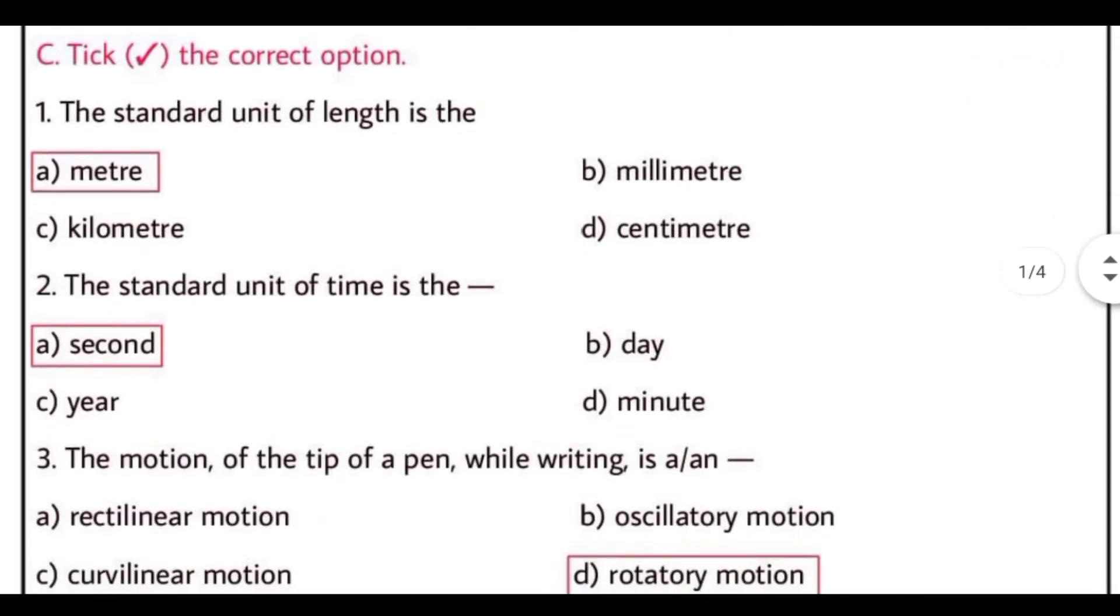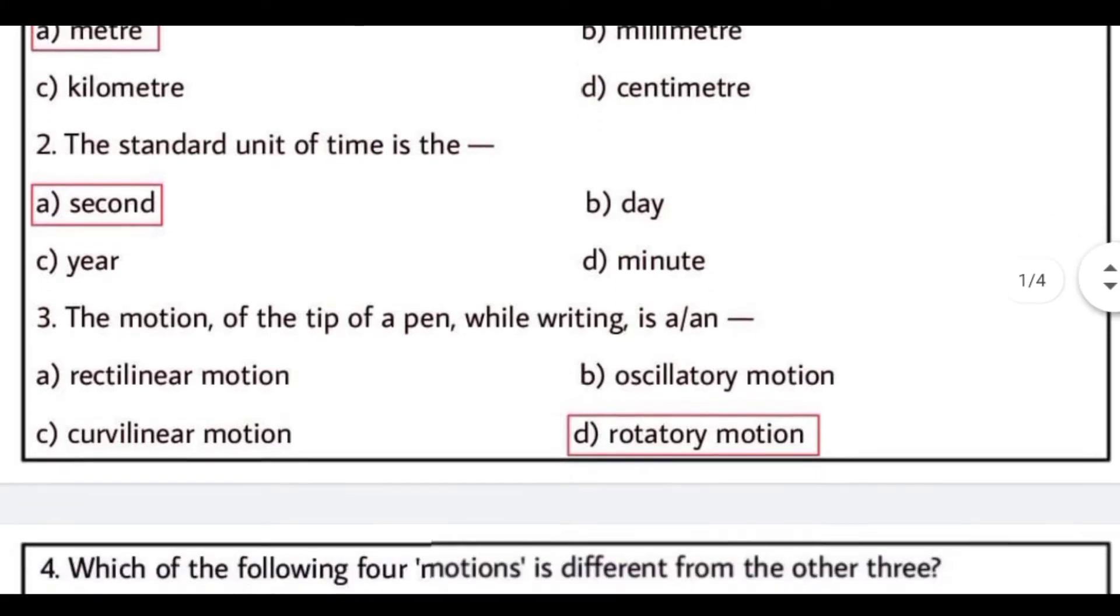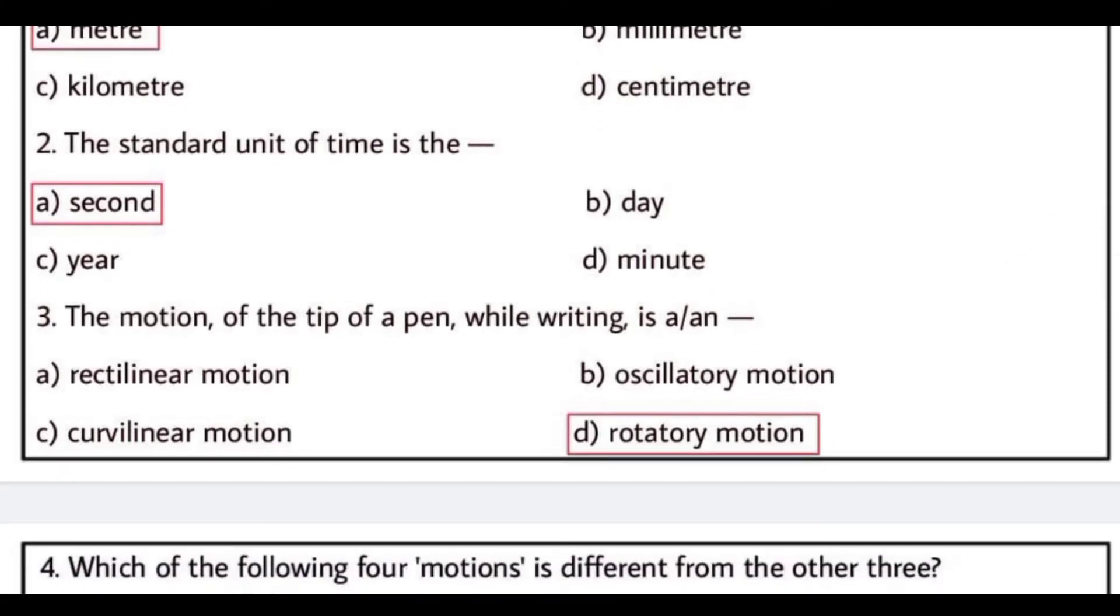Now, tick the correct option. The standard unit of length is meter. The standard unit of time is second. The motion of the tip of a pen while writing is a rotatory motion. Jab aap likh rahe hote hain, toh pen ke tip pe jo ball hota hai, woh ghol ghol ghoomta hai.